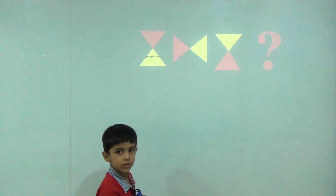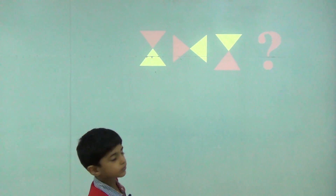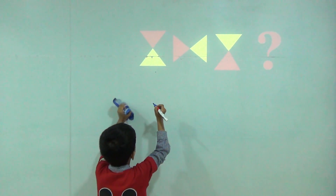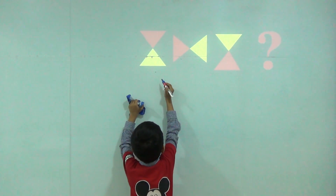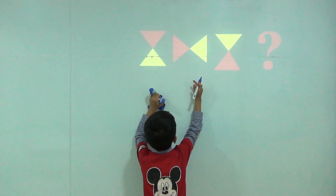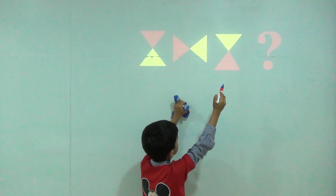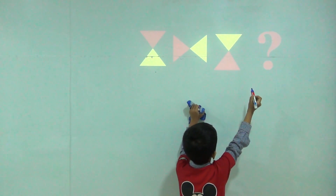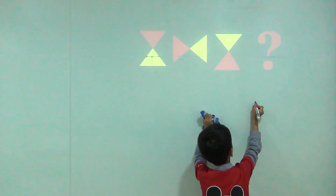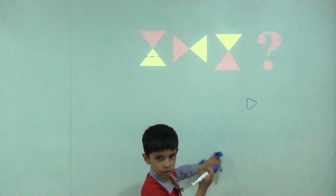This is moving anti-clockwise. Yellow is down, then it is right side, then it is up. So here would be left side.